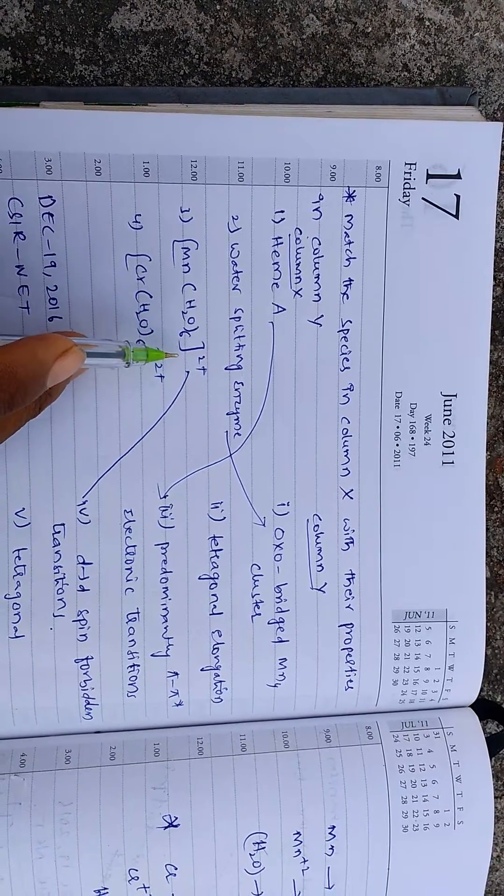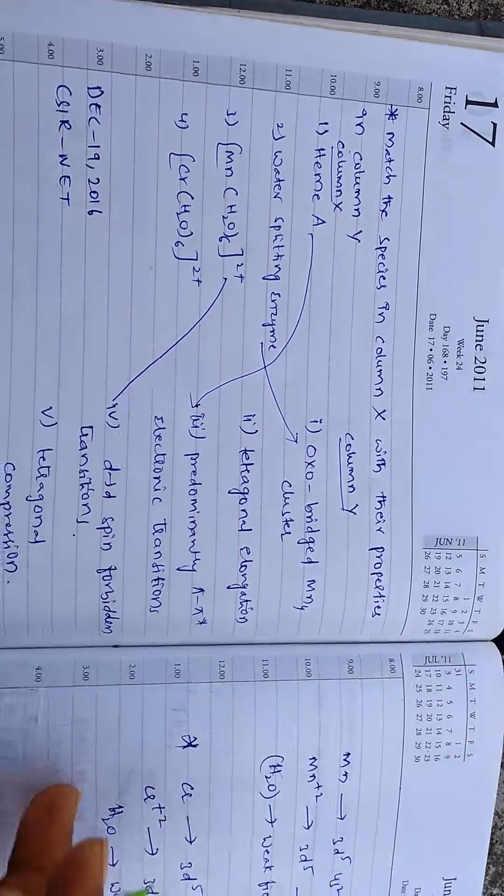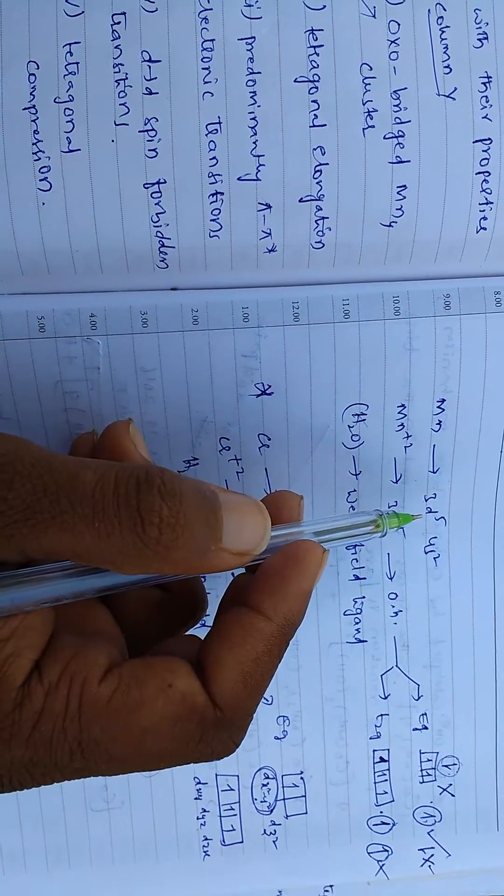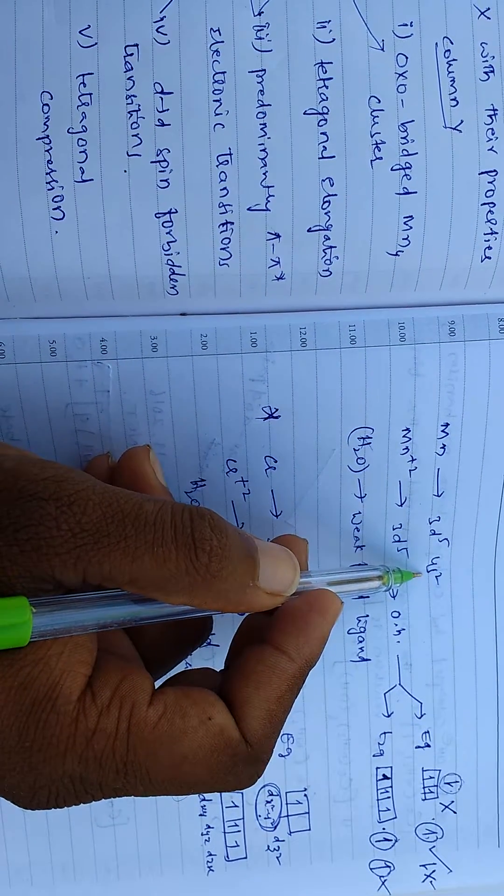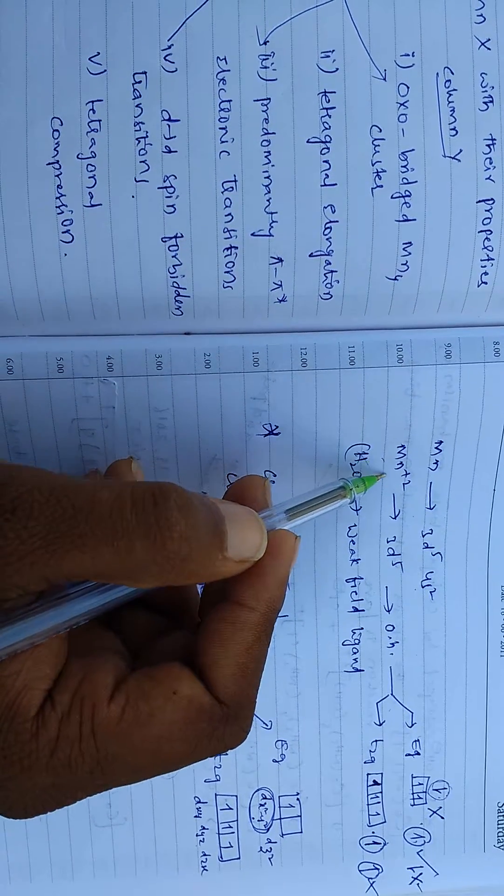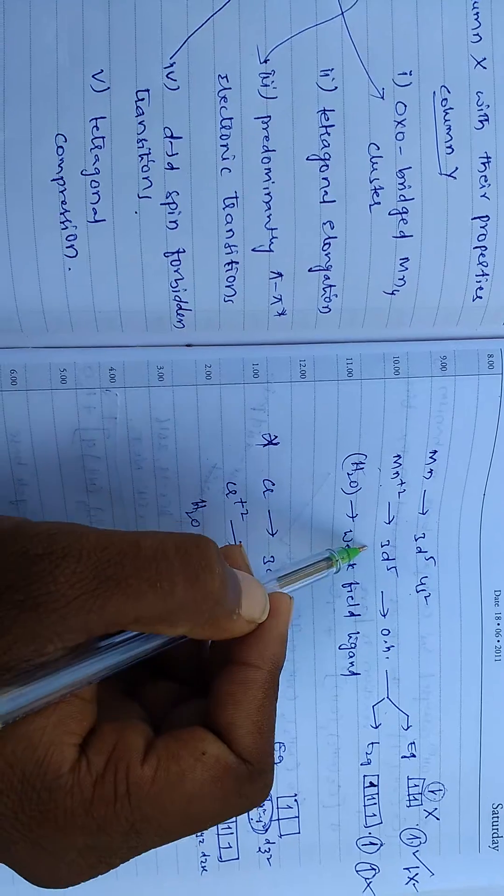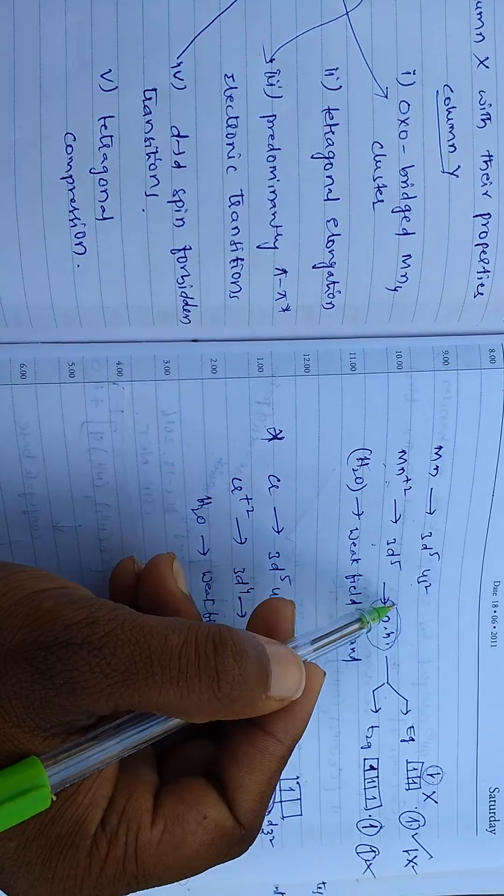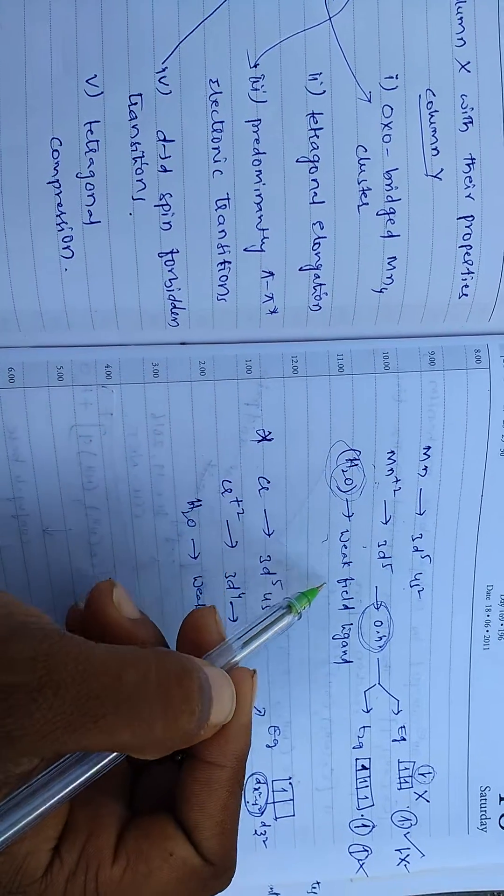And Hexa-Aqua-Manganese plus-2 has d-d spin forbidden transitions. Manganese in that complex has 3d5 4s2 electronic configuration. In the given complex, manganese has plus-2 charge, meaning it has lost 2 electrons and has 3d5 electrons. It is octahedral with weak-field H2O ligands.